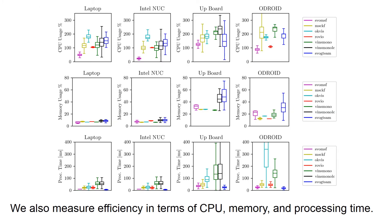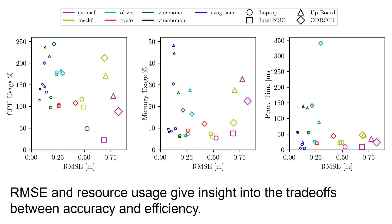The odometric error results indicate algorithm accuracy and robustness over all dataset sequences for different trajectory lengths. We also measure efficiency in terms of CPU load, memory usage, and per-frame processing time. Plotting RMSE versus resource usage gives insights into the tradeoffs between accuracy and efficiency for each algorithm.